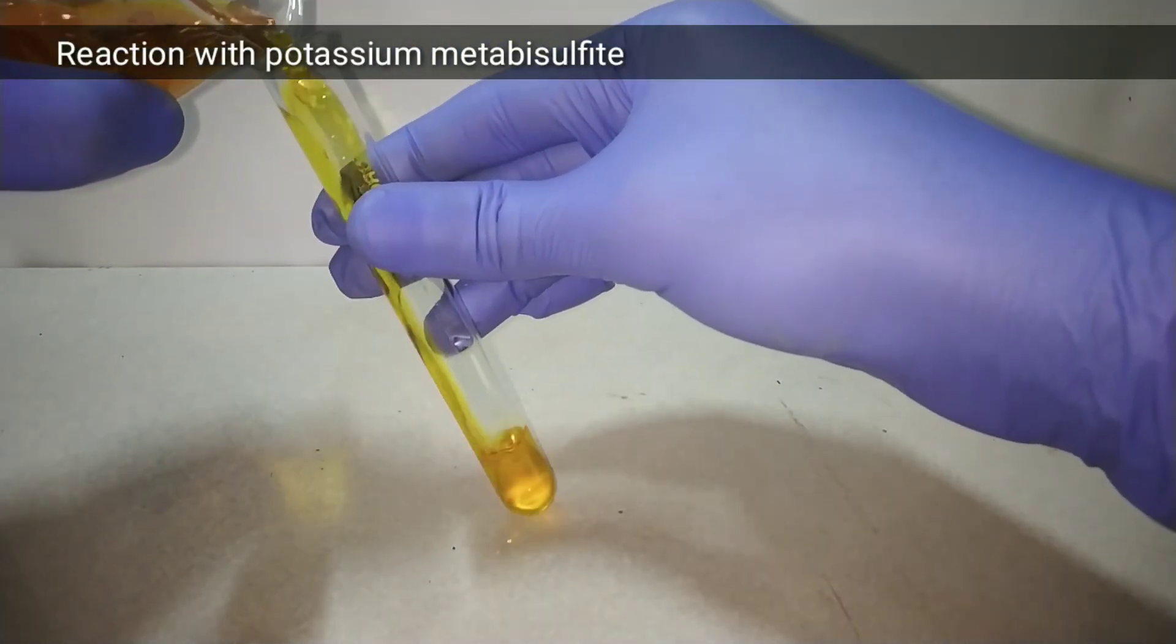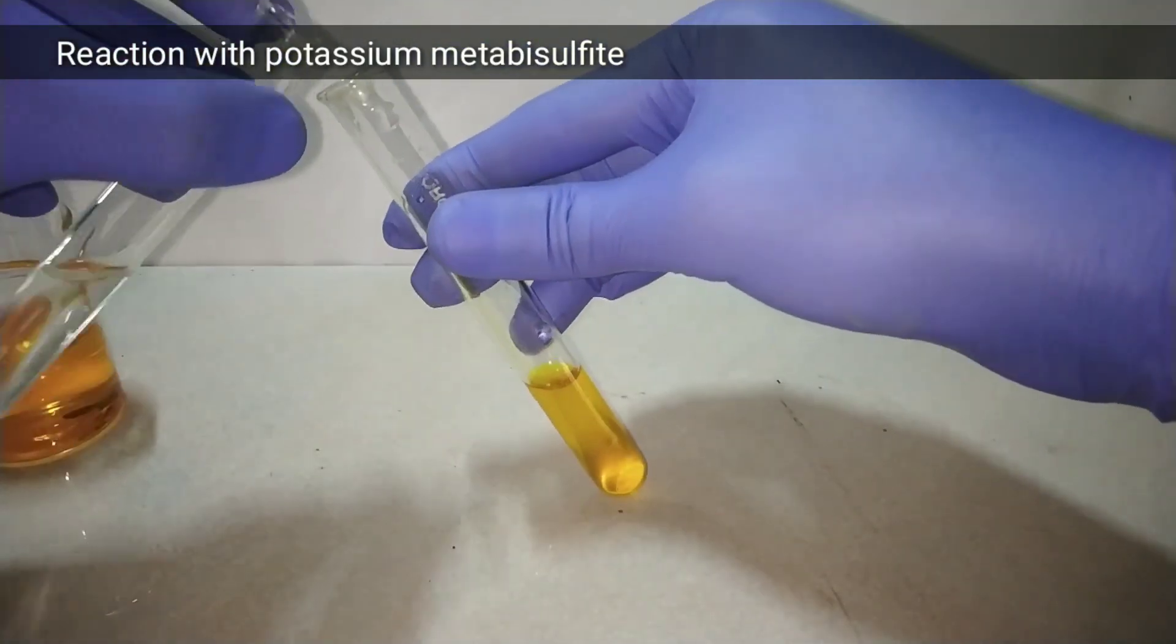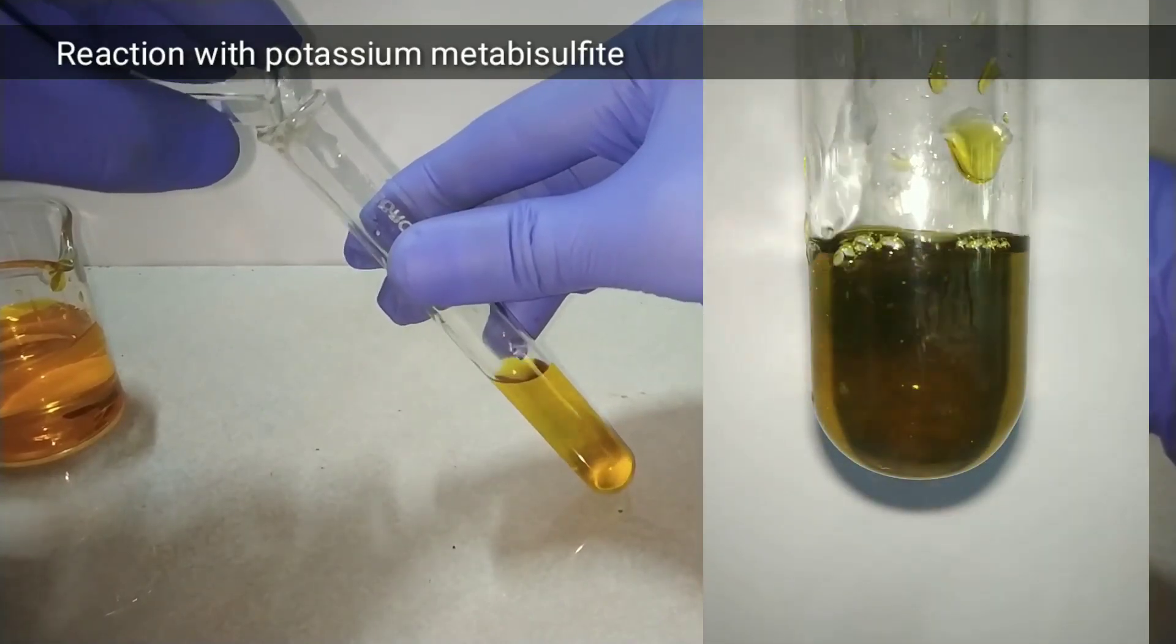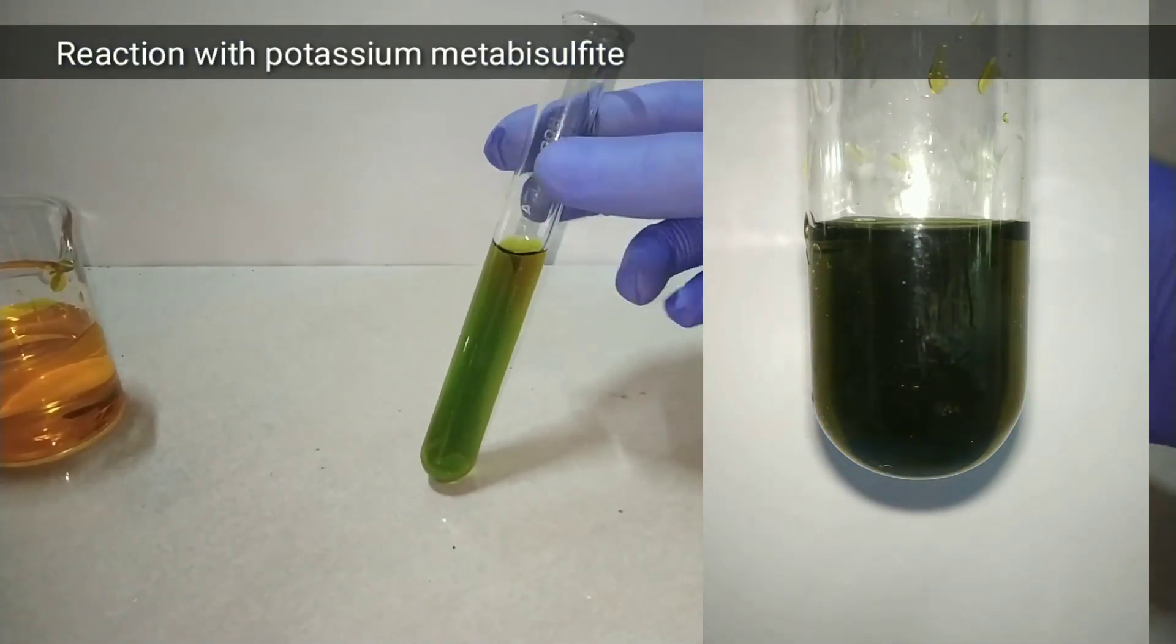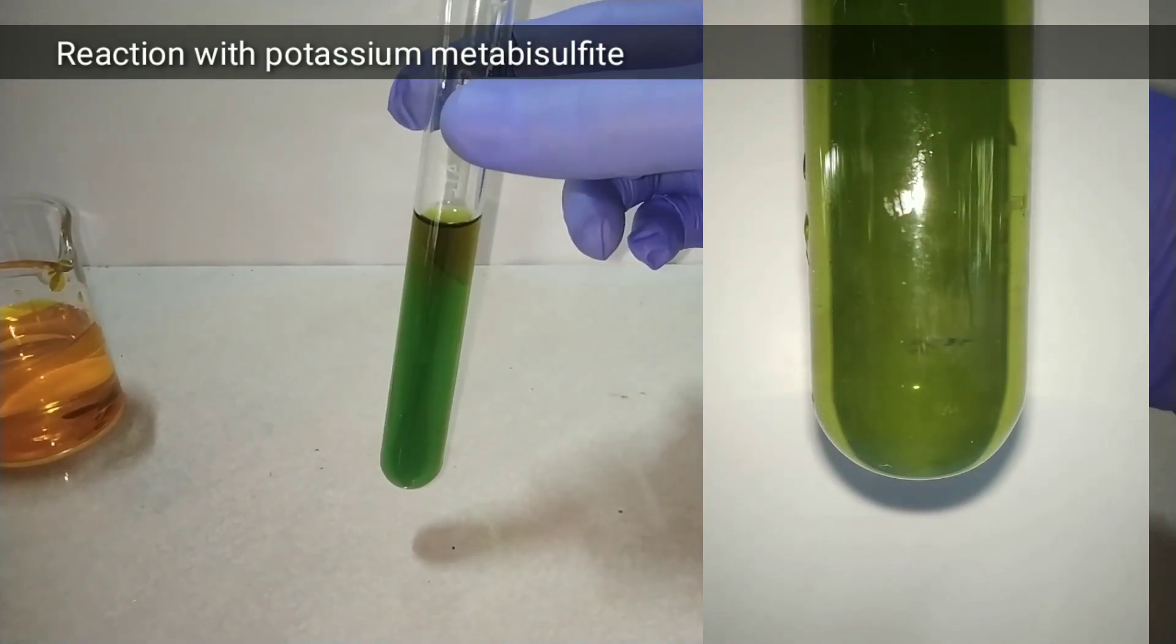On adding potassium metabisulfite which is a reducing agent, the plus 6 oxidation state of ammonium dichromate has been transformed to or reduced into plus 3 oxidation state and you can see the color has turned from orange to green.